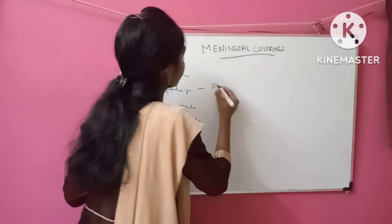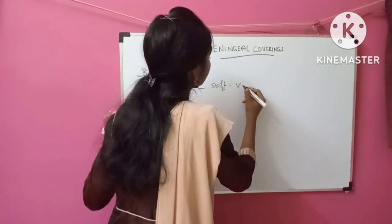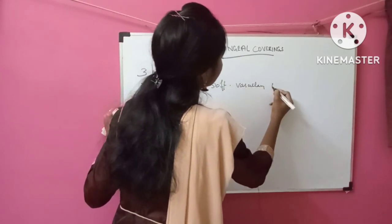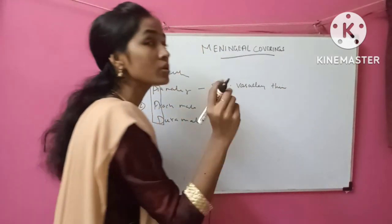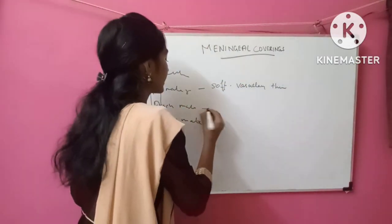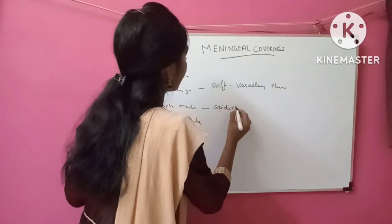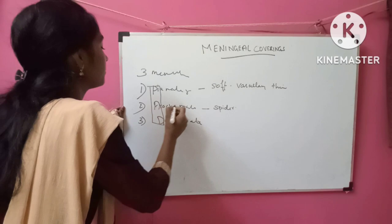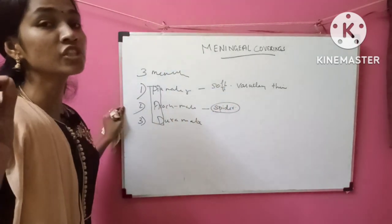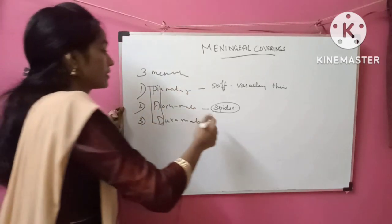Pia means soft. It is a soft, vascular, and thin layer which is closely attached with the central nervous system. Second is arachnoid. Arachnoid means spider-like trabeculae, which is present in the central nervous system.